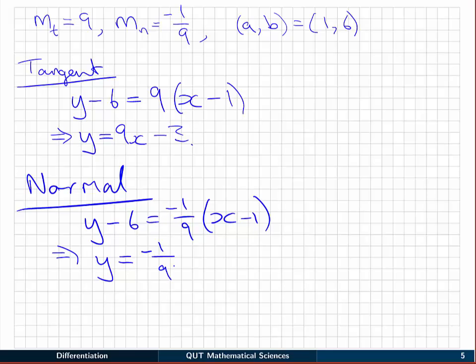And rearranging, we have -1/9x + 1/9 + 6 will be +6 and 1/9. Or if you like, you can write that as 55/9 or a decimal equivalent. It doesn't really matter.